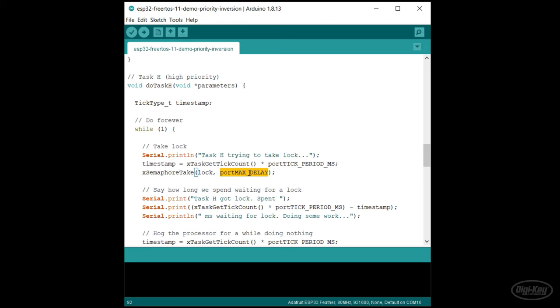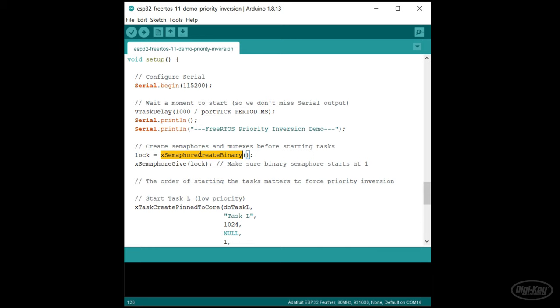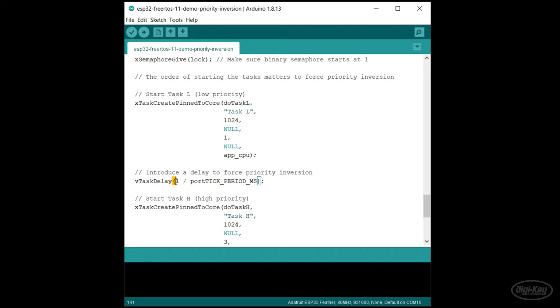In setup, I use a binary semaphore as a lock. I don't want to use a mutex here, as mutexes in FreeRTOS actually contain the fix for unbounded priority inversion, which we'll get to later. I have to increment the binary semaphore before I start the tasks. I also introduce a 1 millisecond delay after starting the low-priority task in order to force priority inversion to occur at the beginning.